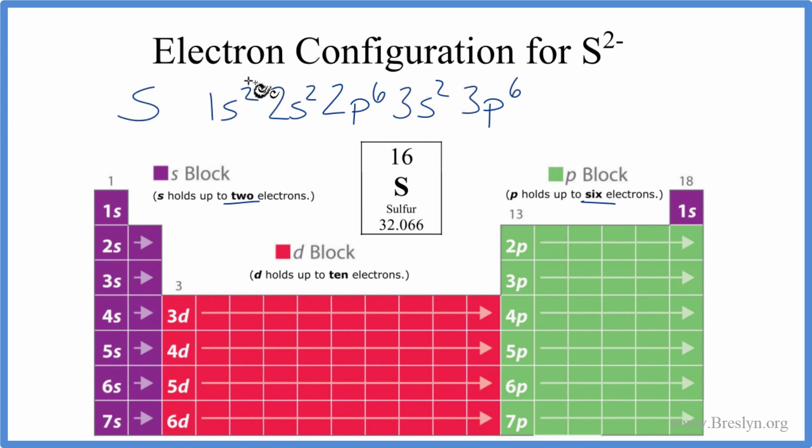And this is the electron configuration for S2 minus, the sulfide ion. You might note that the third energy level, these 3s here, we have 2 plus 6. We have 8 electrons. These are the valence electrons.